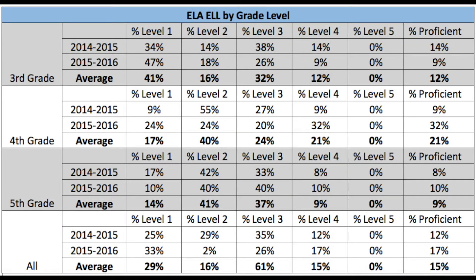The 2014-15 and 2015-16 ELA data for ELL students sorted by grade level shows that 3rd grade had a 5% decrease in overall proficiency. 4th grade proficiency rose 23%, with level 4 making the most growth. 5th grade students had a slight increase with fluctuations of 7 or fewer percentage points across all levels. Notably, in both years there were 0% of students performing at a level 5 in all grade levels.